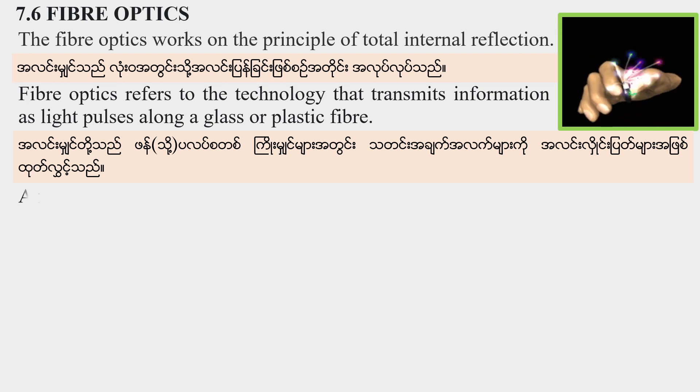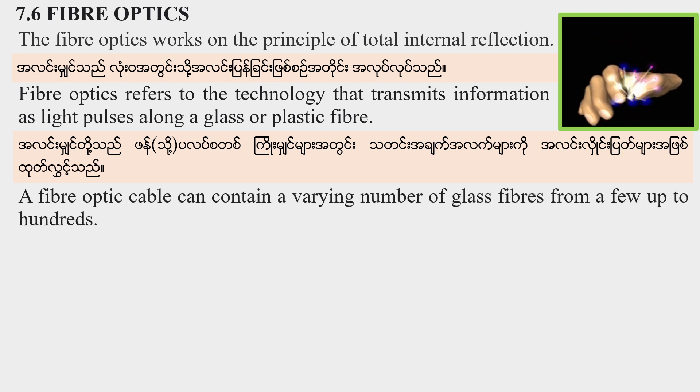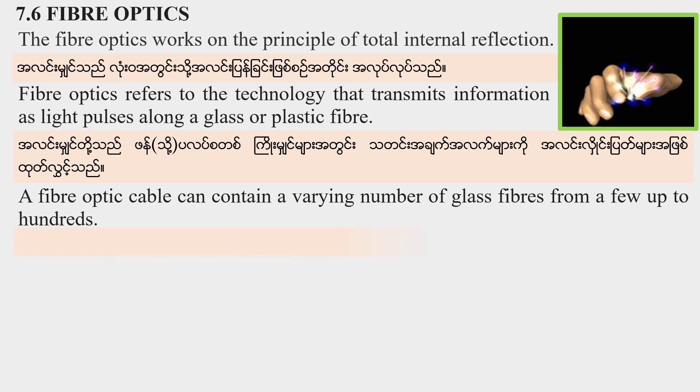A fiber optic cable can contain varying numbers of glass fibers, from a few up to hundreds.